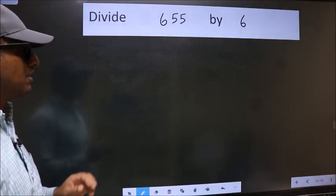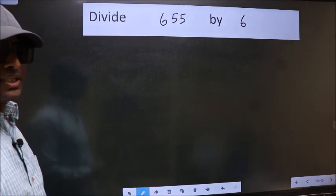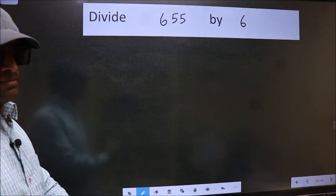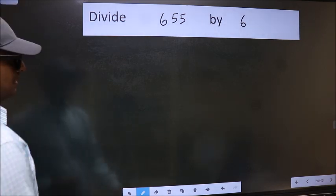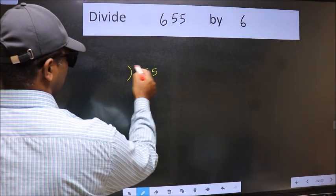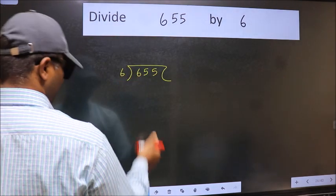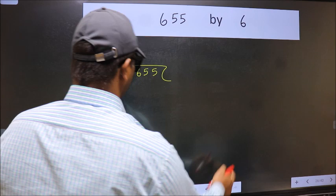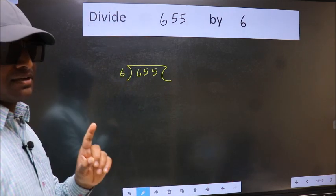Divide 655 by 6. To do this division, we should frame it in this way. 655 here and 6 here. This is your step 1.